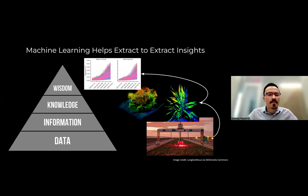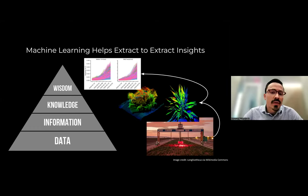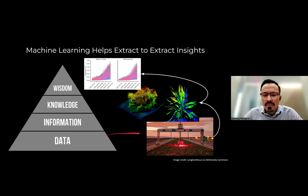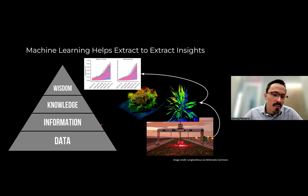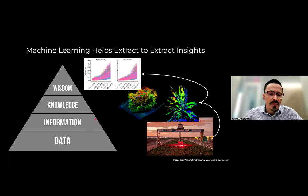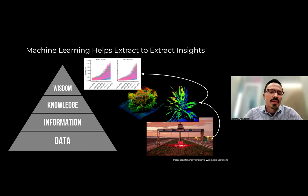All this data is collected, but then you have to extract information from it. This is where machine learning comes into play. Machine learning allows us to extract insights from data. Starting at the base of the pyramid using a platform such as a robotic platform, we want to move that data up into the information realm using machine learning, and then further into the knowledge phase and the wisdom phase.